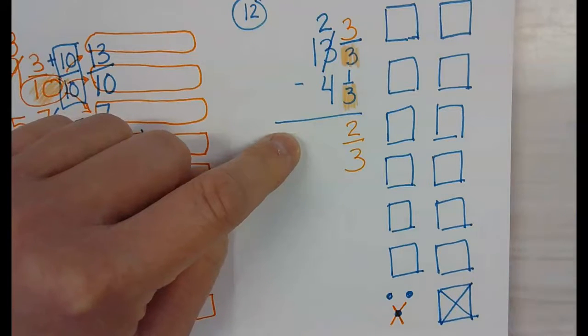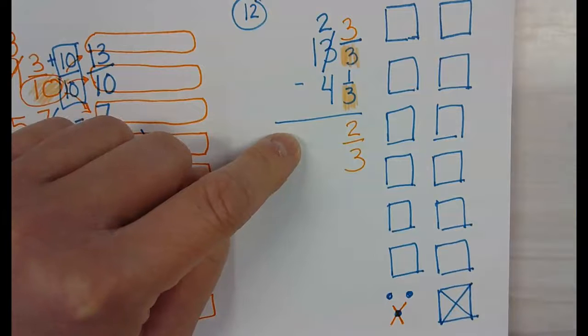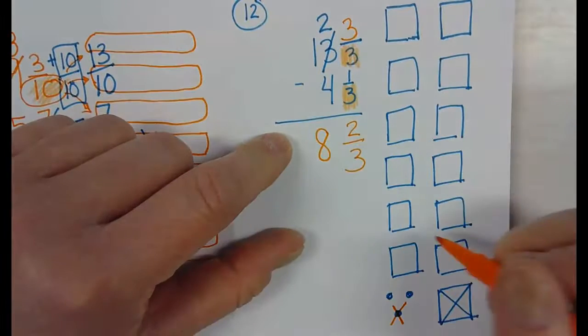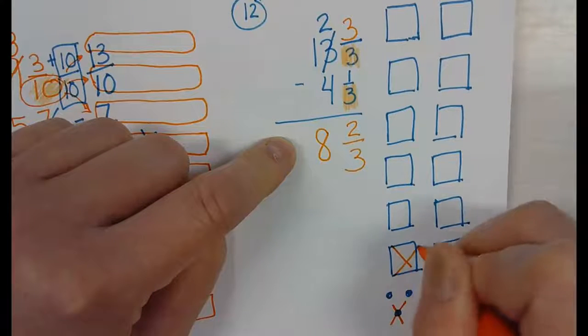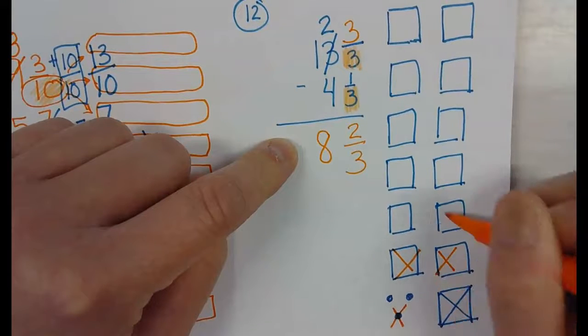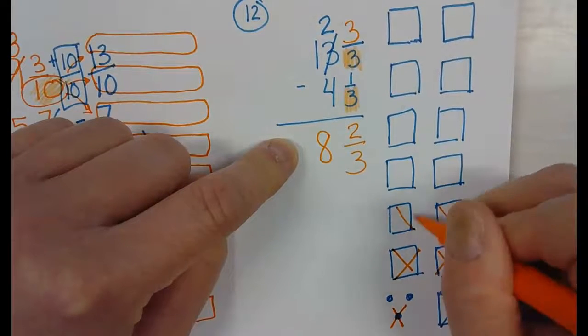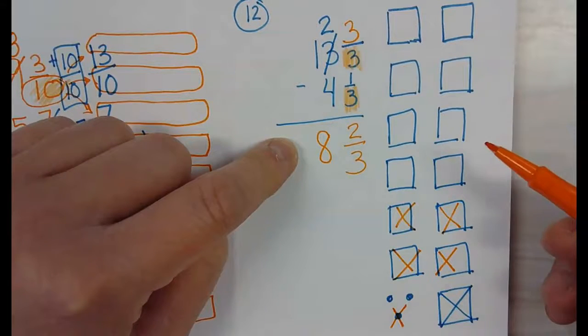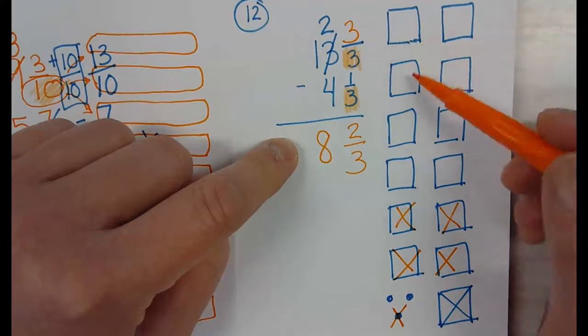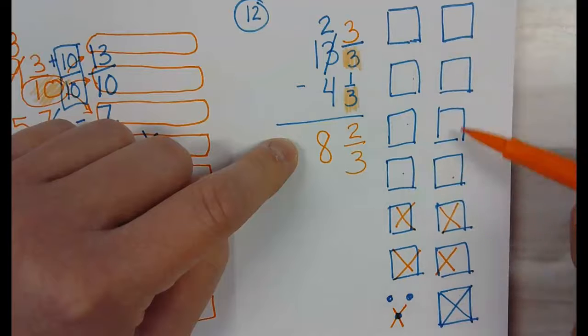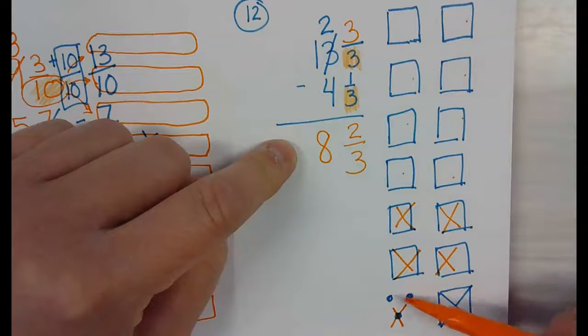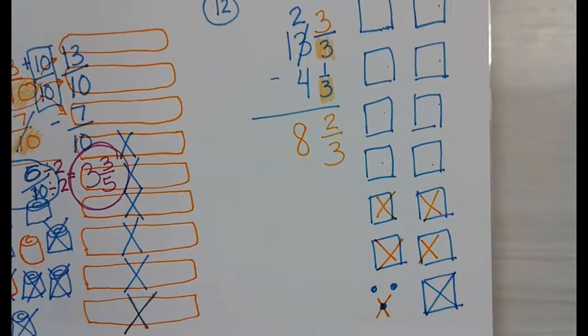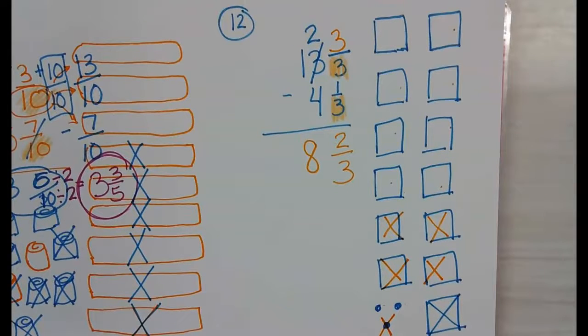Let's see, does my picture agree with the numbers? 1, 2, 3, 4, 5, 6, 7, 8, and 2 out of 3 left. Yes, it does. Any questions on number 12?